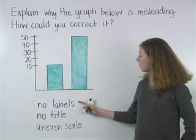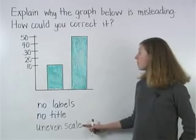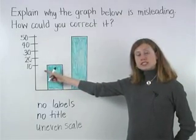So we could correct this graph by adding labels to the axes, adding a title to the graph, and making the scale on the vertical axis even.